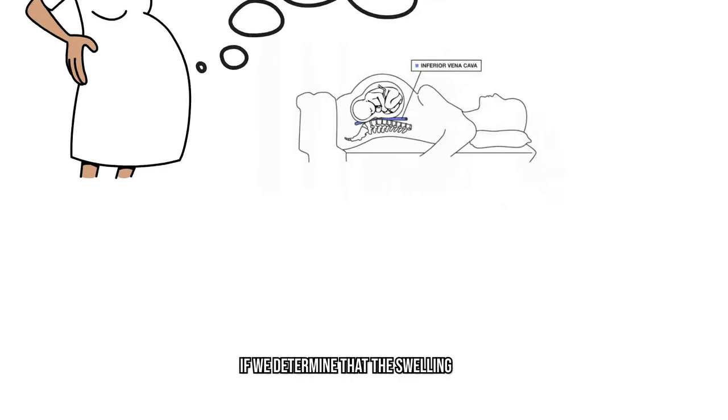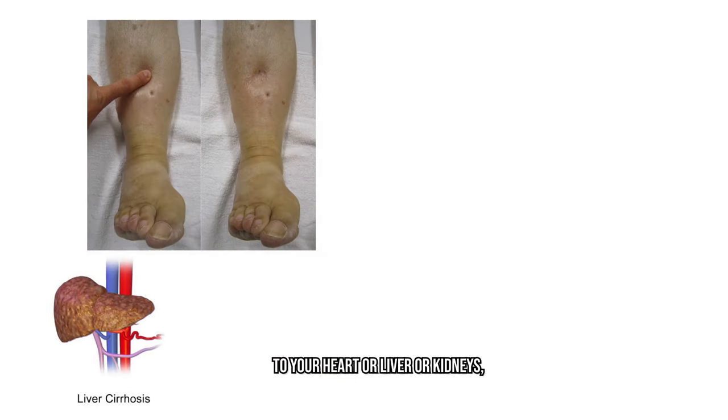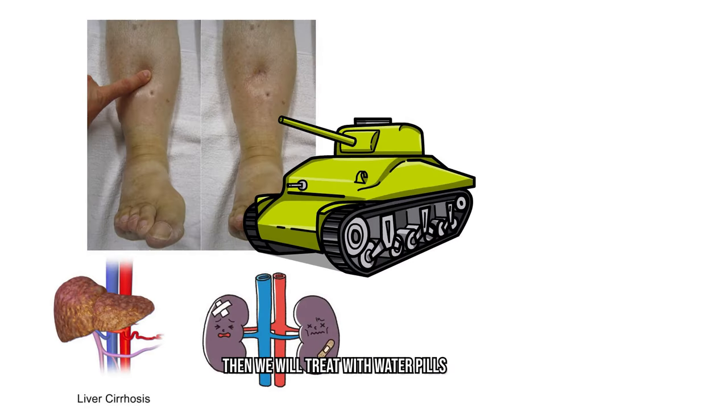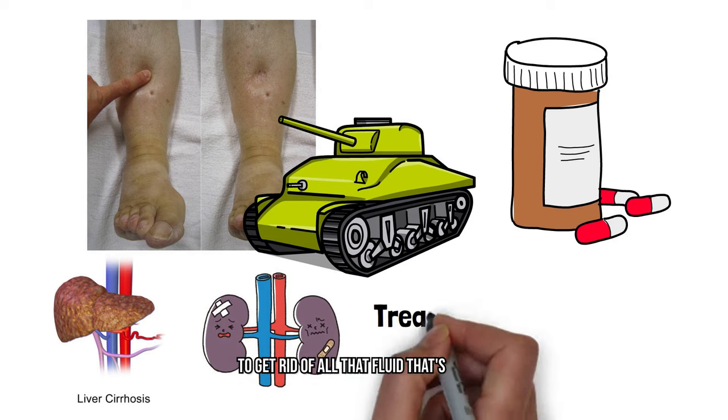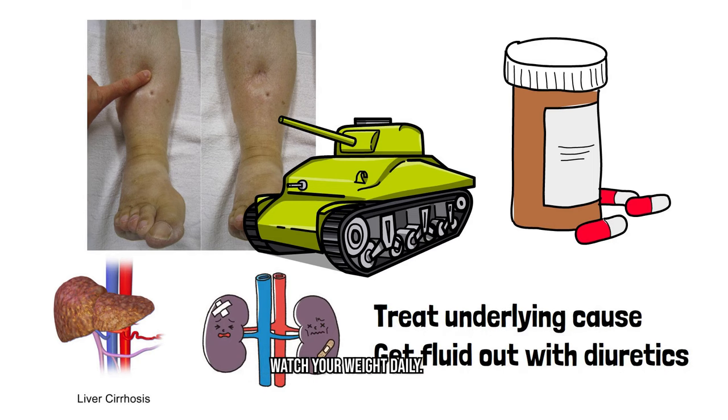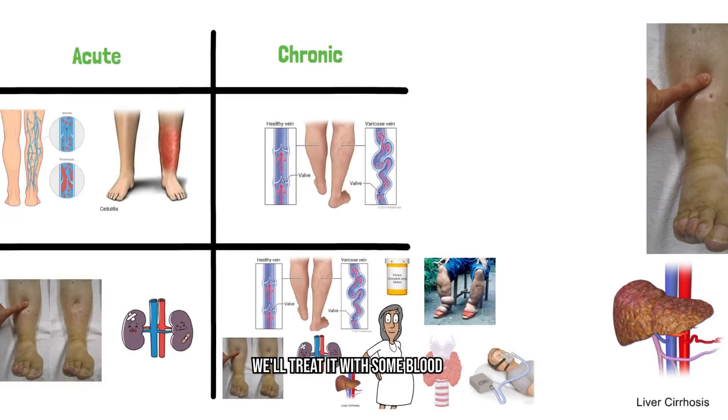If we determine that the swelling is related to your heart or liver or kidneys, then we will treat with water pills like diuretics to get rid of all that fluid that's collecting. You might have to be on this long term and watch your weight daily. If it's DVT, we'll treat it with some blood thinners.